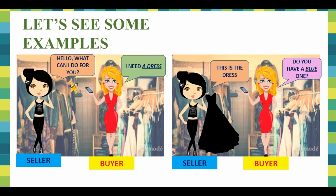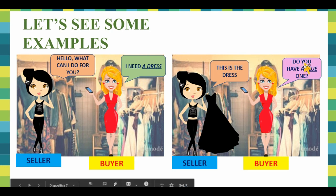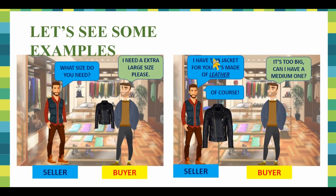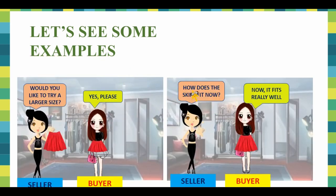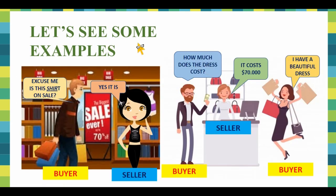More examples: 'What can I do for you?' — 'I need a dress.' — 'This is the dress but the dress is black. Do you have a blue one?' More examples: 'What size do you need?' — 'I need an extra large size, please.' So this one is too small for him, and he is asking for an extra large size. There are more examples in the PowerPoint.